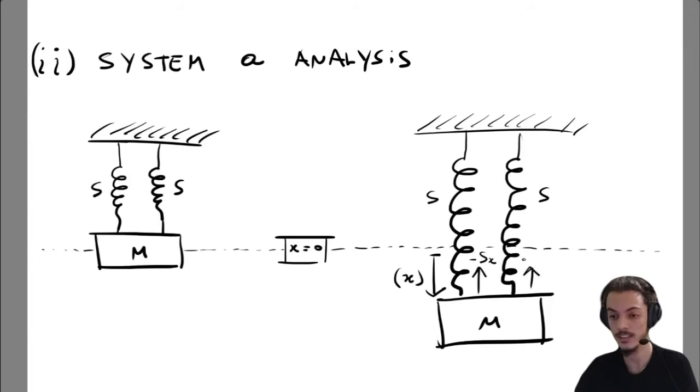And what we will see is that each spring, each ideal spring, will cause a force on the mass that is proportional to this displacement and the constant here is s for each spring.